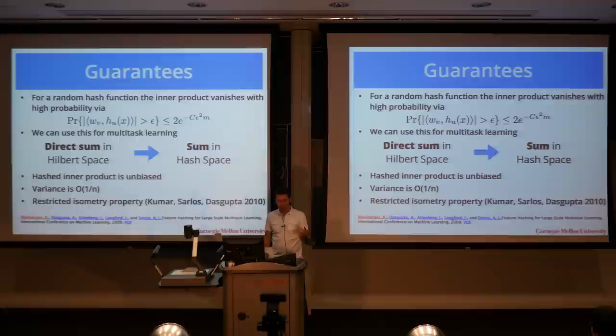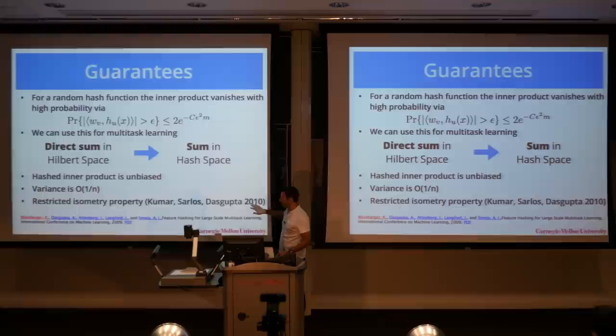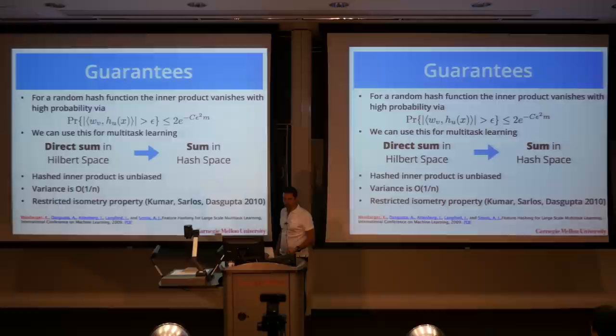The hashed inner product is unbiased, the variance is small, and there's much more sophisticated detailed analysis by Kumail, Shalosh, and Das Gupta from 2010, and a follow-up paper by Clarkson and Woodruff, which gives tighter bounds yet again for the hashed kernel.